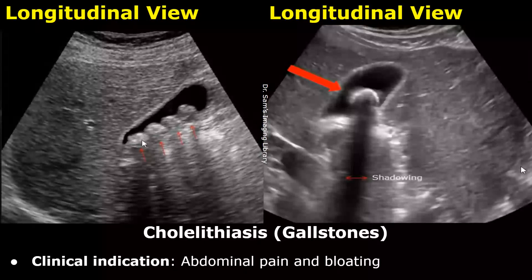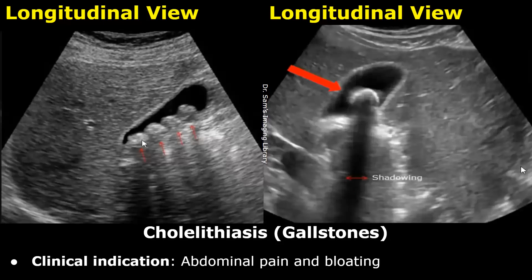Hello everyone, this is Dr. Sam and this video is about gallbladder ultrasound reporting. We will look at gallbladder pathologies and see how to write reports for each pathology. This will include clinical indication, findings, and impression. We are only focusing on the gallbladder, so other organ reports will not be in this video. This is not a complete abdominal ultrasound report.